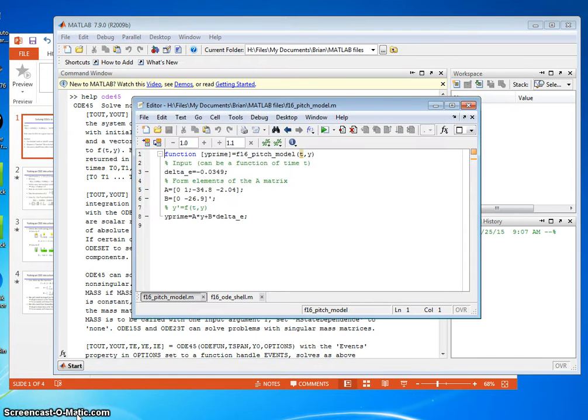A function file in MATLAB starts with the word function on line 1. After you type function, it will turn the font to blue. The output of the function is Y prime. F16_pitch_model is the name of the function—I can name it anything I want. T and Y are the inputs to the function. That's line one.